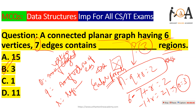If you want to calculate regions when vertices and edges are given, or calculate vertices when edges and regions are given, or calculate edges when vertices and regions are given — any time two values are known, use Euler's formula N − Q + R = 2 to find the third in a planar connected graph.